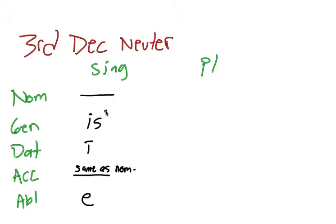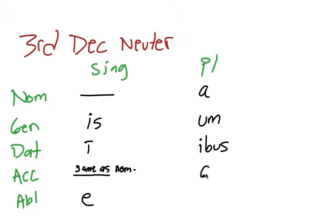So really the only difference between a third declension neuter noun and a regular third declension noun is that nominative and accusative are the same. The plural is -a, just like the plural of second declension neuter. Genitive plural is -um. Dative plural is -ibus. Accusative plural is -a — again, nominative and accusative are always the same in neuter. And then ablative is -ibus.